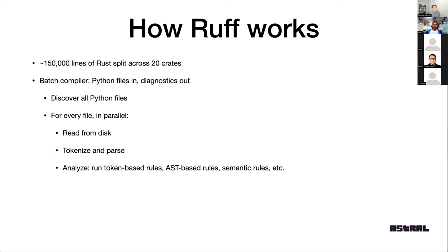We traverse over the AST and build up a model of what are all the symbols, function definitions, variables, where they're defined, what are the imports, and what's used where. Consider the example of moving and quoting a pandas DataFrame type annotation — we need a lot of semantic analysis to support that. We need to know all the symbols imported, where they were used, whether all usages were only type annotations, and when we want to fix it, what locations in the code need to be quoted. That's where the bulk of the complexity lives: traversing the AST, building up a model of what's happening, and then enforcing rules on it.